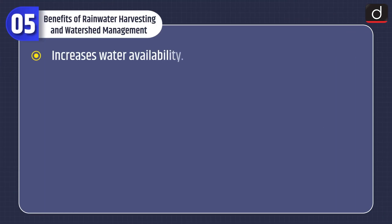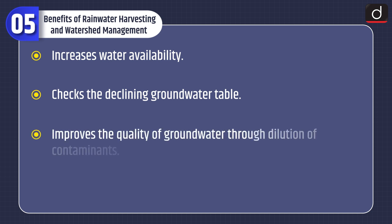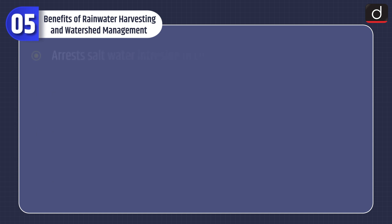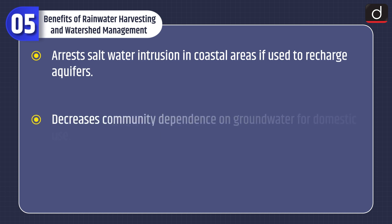Now let's discuss about the benefits of rainwater harvesting and watershed management. These include: increases water availability; checks the declining groundwater table; improves the quality of groundwater through dilution of contaminants; prevents soil erosion and flooding; arrests saltwater intrusion in coastal areas if used to recharge aquifers; and decreases community dependence on groundwater for domestic use.